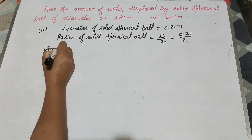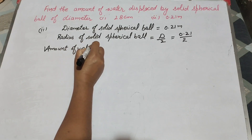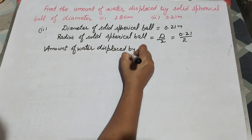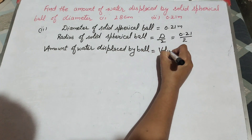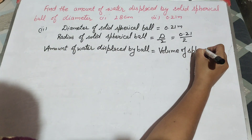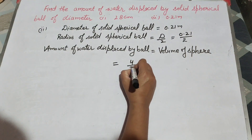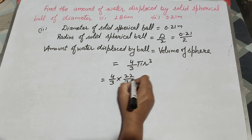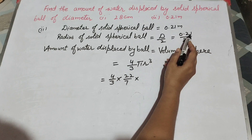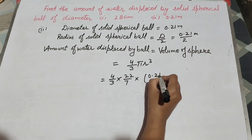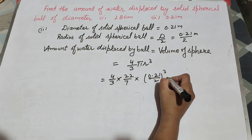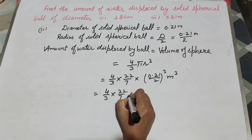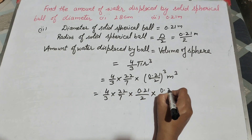Now we find the amount of water displaced by the ball. It is equal to the volume of the sphere, which is 4 over 3 times π times r cubed. And it is equal to 4 over 3 times 22 over 7 times r cubed, where r is 0.21 over 2 meters. So we have 4 over 3 times 22 over 7 times (0.21 over 2) times (0.21 over 2) times (0.21 over 2).